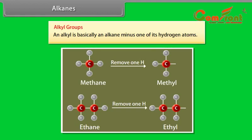Alkyl groups: An alkyl is basically an alkane minus one of its hydrogen atoms. For example, if methane removes one hydrogen, we will get methyl. Similarly, if ethane removes one hydrogen, we will get ethyl.